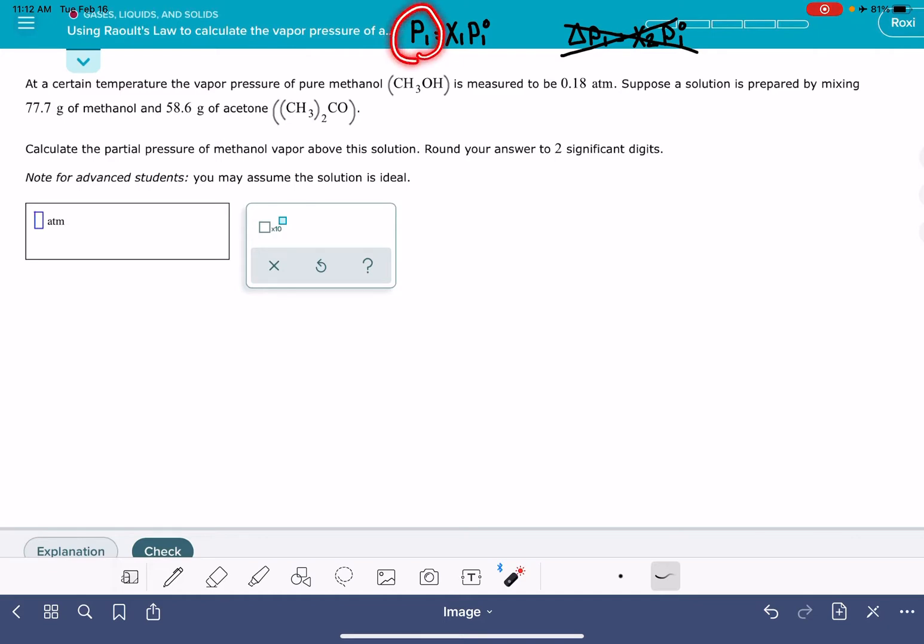To calculate the pressure of methanol, we need to know the mole fraction of methanol and the vapor pressure of pure methanol. The problem is giving us the vapor pressure of pure methanol, 0.18 atmosphere. There's that guy right there.